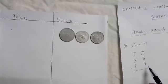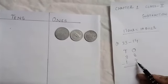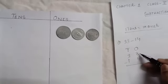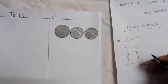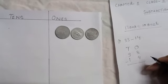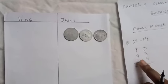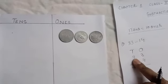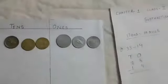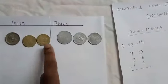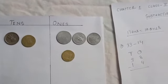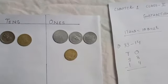We have to take away 4 ones, but we cannot take away 4 ones from 3. So we have to borrow from the tens. There are 3 tens. We carry 1 ten to the ones column, but we cannot put tens directly in the ones column.